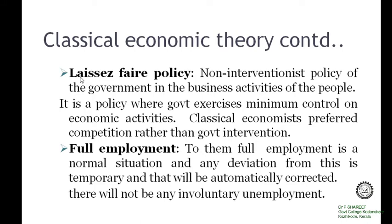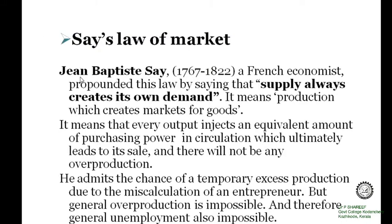The first major element of the classical system is full employment equilibrium. According to classical economists, the economy functions at full employment level. Full employment equilibrium is a normal situation, and any deviation from that situation is only temporary in nature and will be automatically corrected. There will not be any involuntary unemployment. Full employment is a situation where all people who are able and willing to work at the existing wage rate get employment.